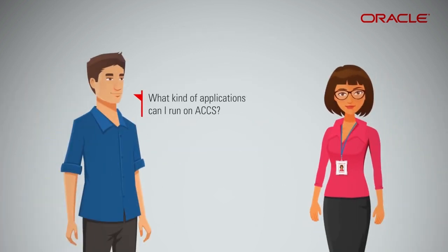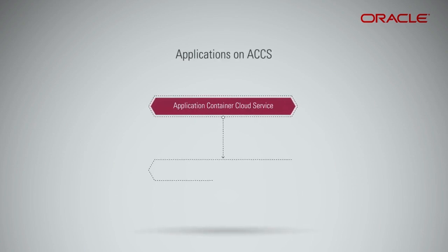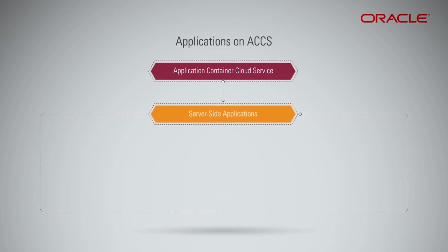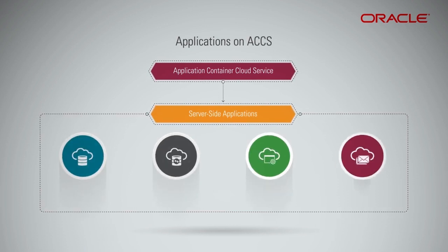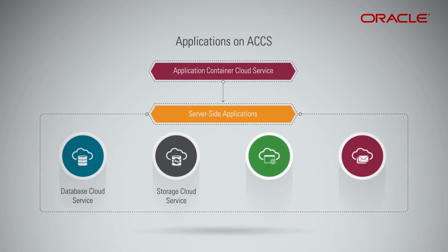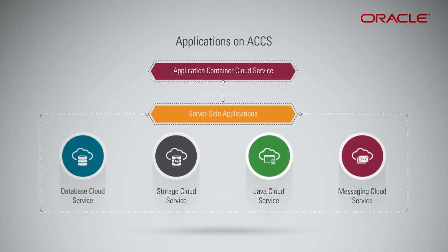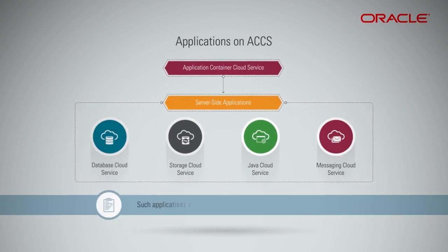What kind of applications can I run on ACCS? Currently, you can use ACCS to run any server-side applications that store the application state information on an external data store, such as Oracle Database Cloud Service, Oracle Storage Cloud Service, Java Cloud Service, and Messaging Cloud Service. Such applications are typically referred to as cloud-native 12-factor applications.